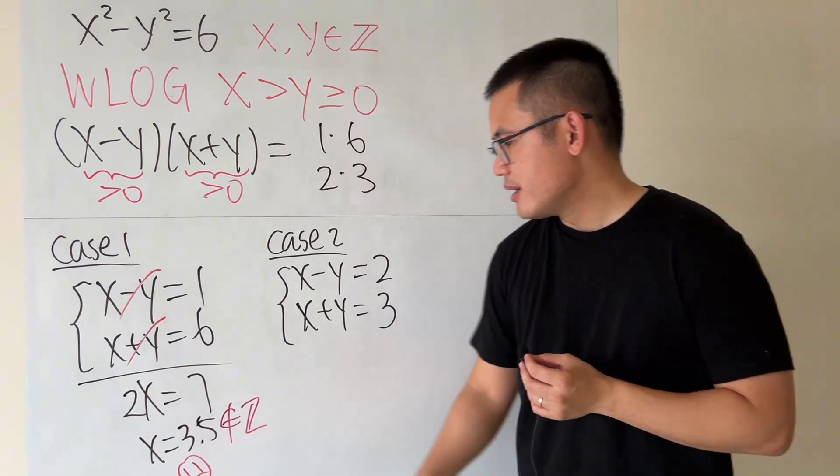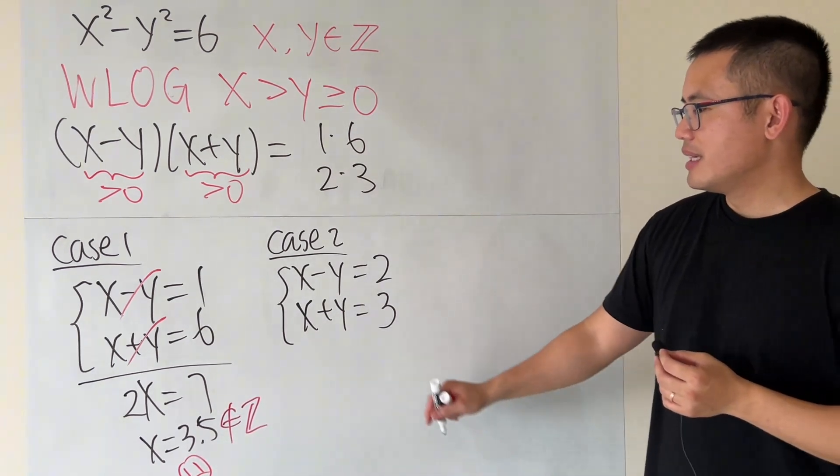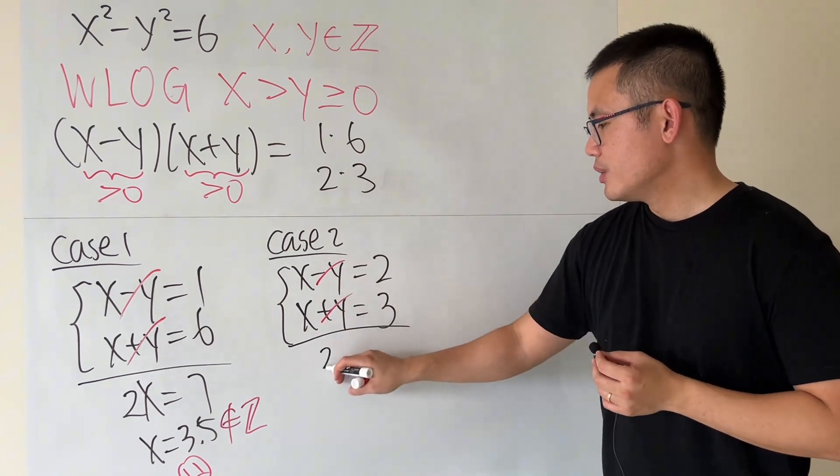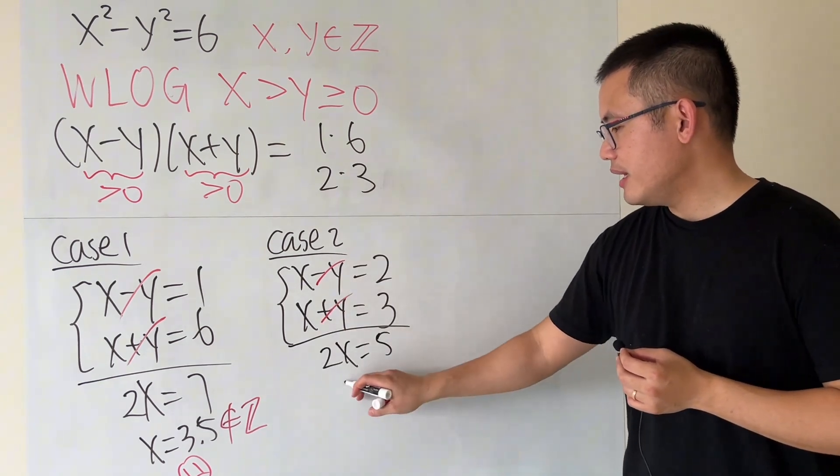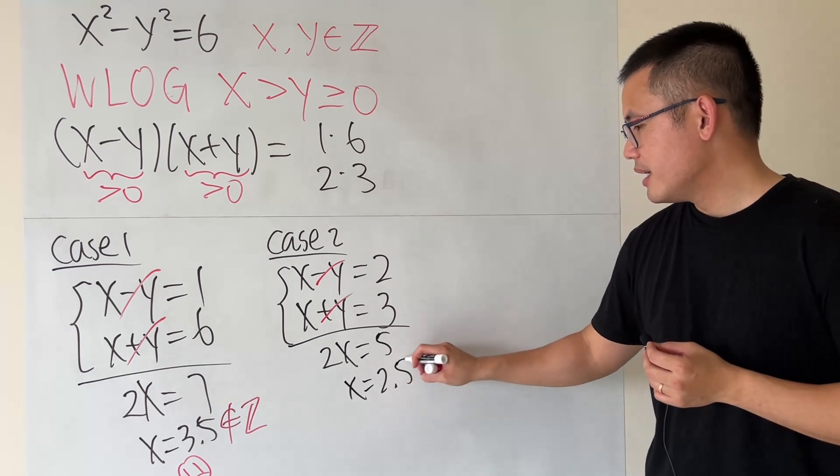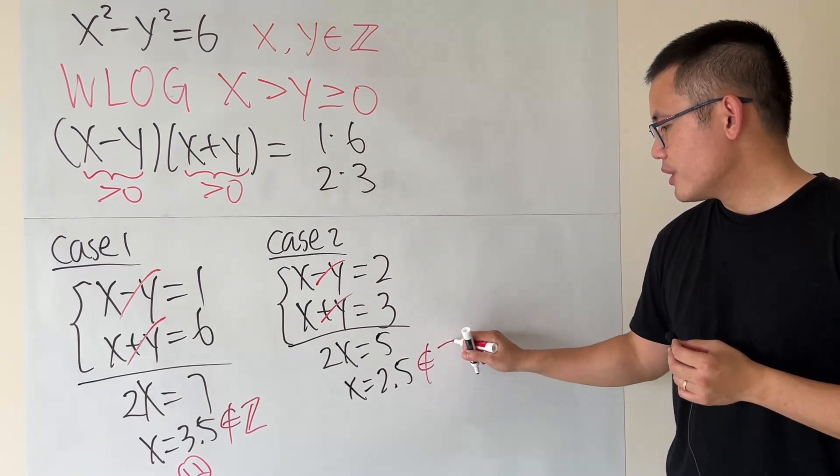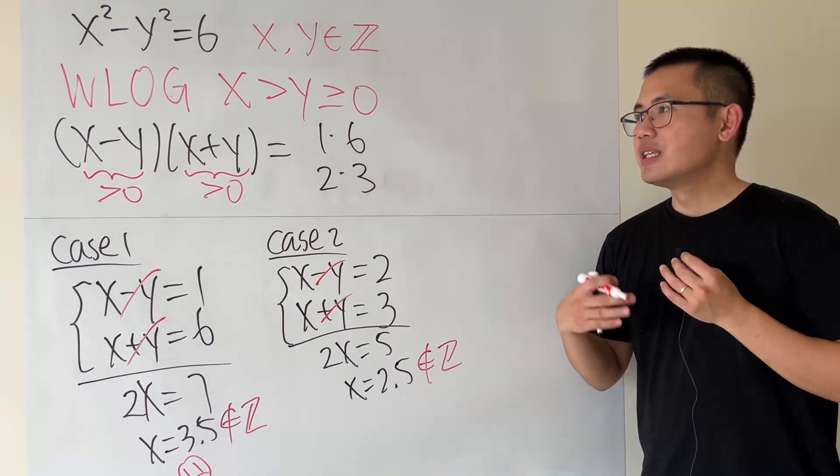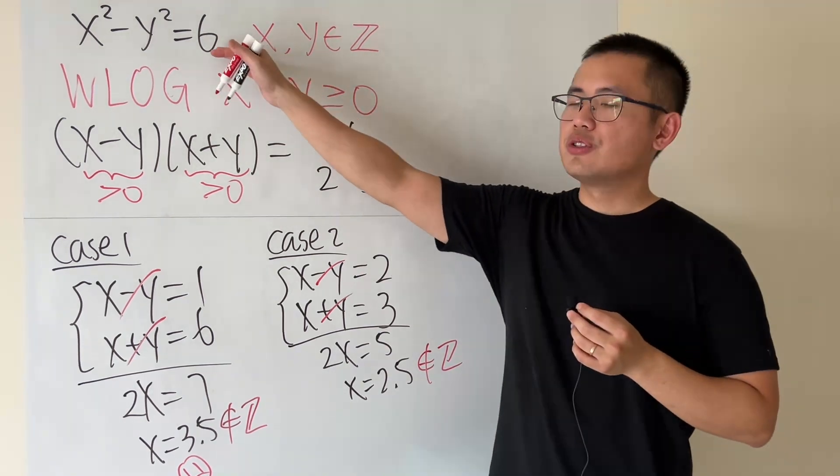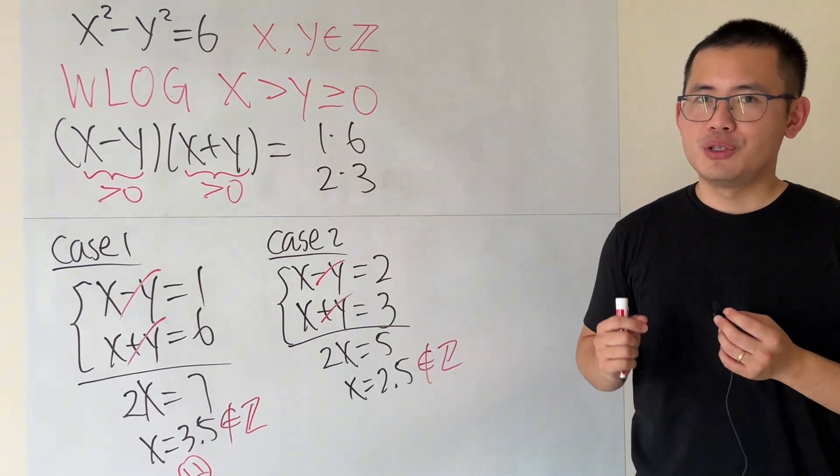Likewise, over here. If we add the equations, we get 2x equals 5, x is equal to 2.5. Again, not an integer here. So in fact, this equation has no integer solutions.